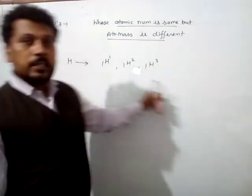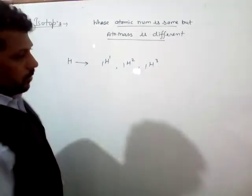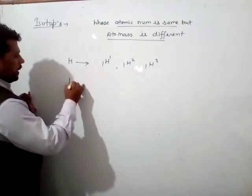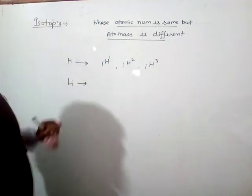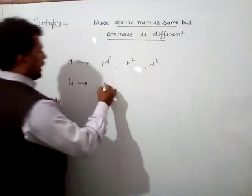Like hydrogen atom, there are three isotopes of hydrogen atom. Like lithium: 3Li6 and 3Li7.